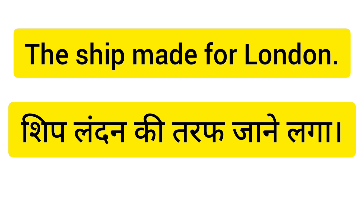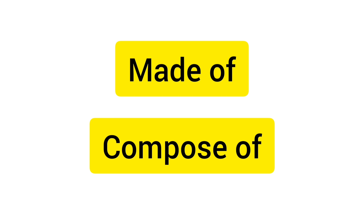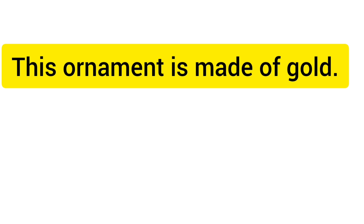Next is made-of. Made-of ka matlab hota hai composed of — yeh cheez isse bani hai, the thing is made up of something. See the example: 'This ornament is made of gold.' Yeh ornament — yeh gehna — sone se bana hua hai.